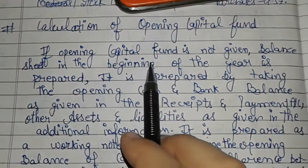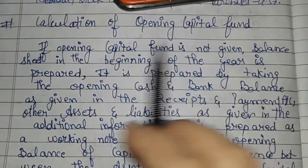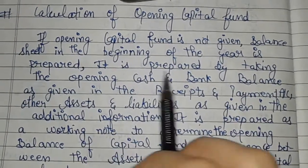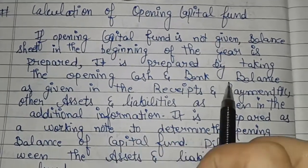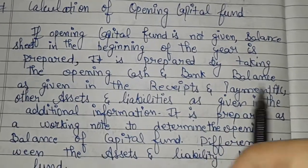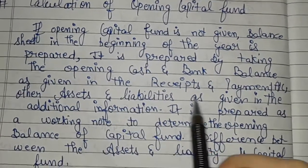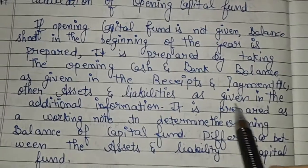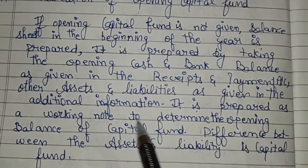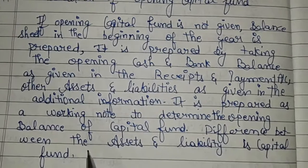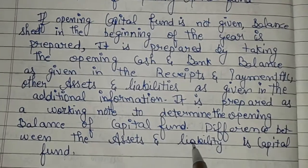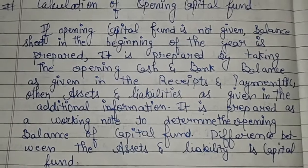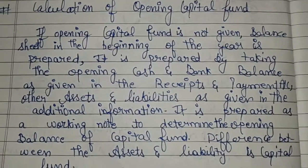If the opening capital fund is not given, a balance sheet at the beginning of the year is prepared. It is prepared by taking the opening cash and bank balance as given in the receipts and payments account. Other assets and liabilities are given in the additional information. It is prepared as a working note to determine the opening capital balance. The difference between assets and liabilities is the capital fund.